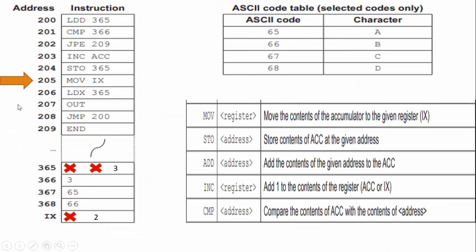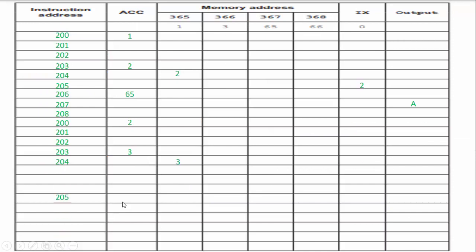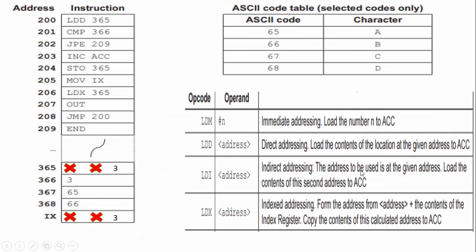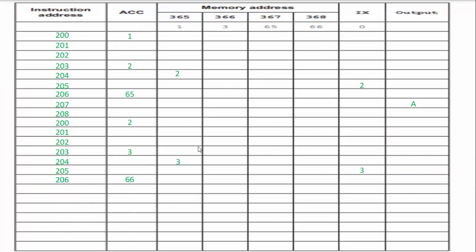I continue with my program. MOV — moving the contents of the accumulator to the index register. The accumulator was three, so the index register is now three. Line 205 updates our index register to three. We keep going: 206, LDX 365 — index addressing, form the address from 365 plus the contents of the index register, which is three. So we are loading from address 368, which has the value 66. Line 206 runs and we update our accumulator to 66.